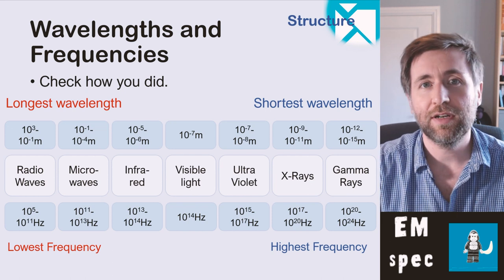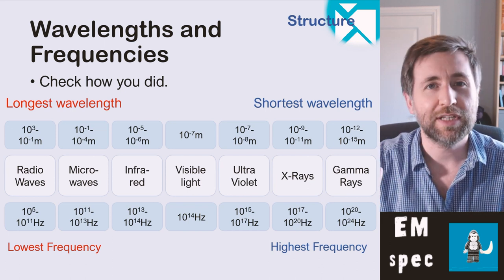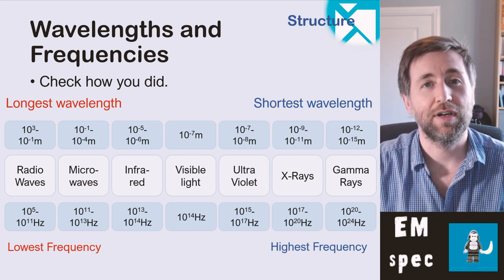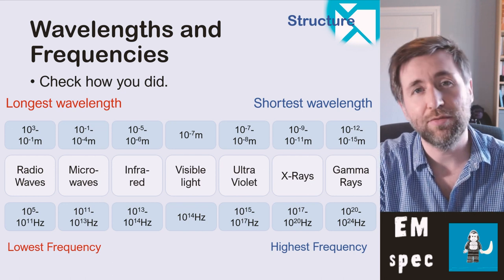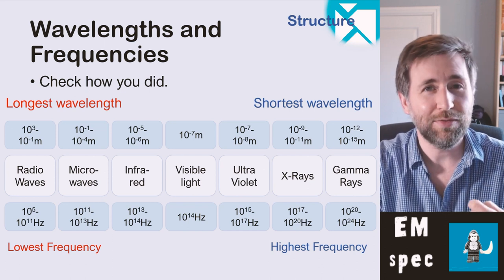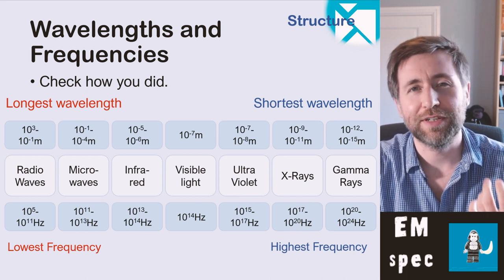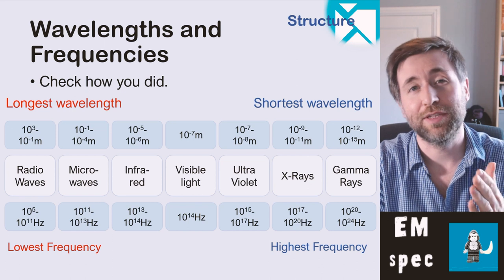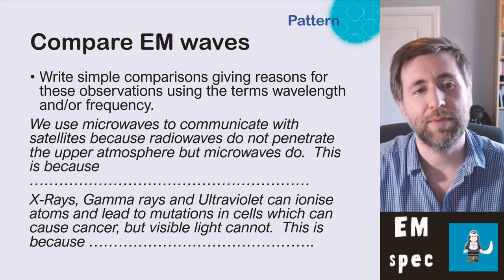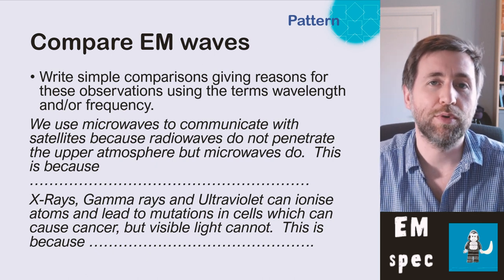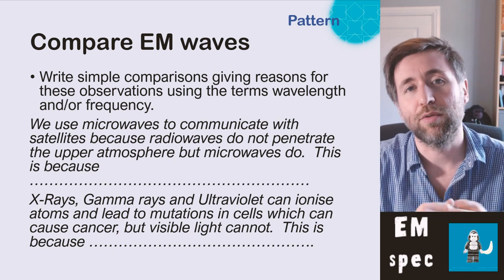The frequency range goes from 10⁵ Hz — tens of thousands of oscillations per second — all the way up to 10²⁴ Hz at the highest energy gamma radiation end. Visible light is 10¹⁴ Hz, which is like 100 trillion waves every second. This slide helps you write comparisons — you should write comparisons about the different portions of the EM spectrum based on frequencies and/or wavelengths. That's the type of thing the examiner is looking out for.